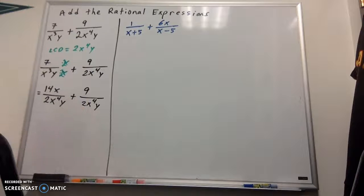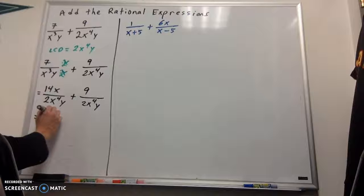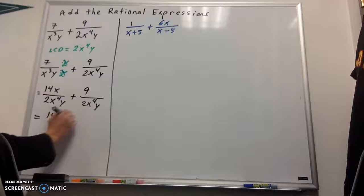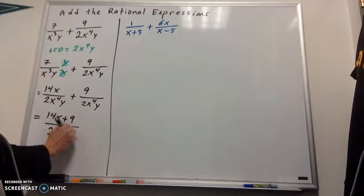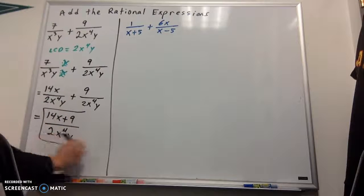So, notice how we have a common denominator now. That means we can add these guys up, add the numerators, but I don't have any common terms, so really it's just going to be 14x plus 9 over 2x to the fourth y. That is my answer.